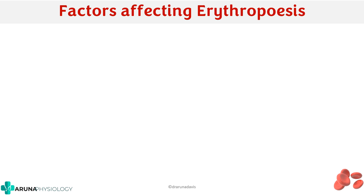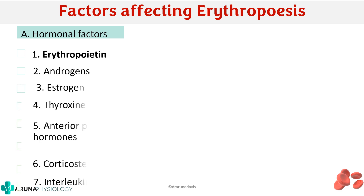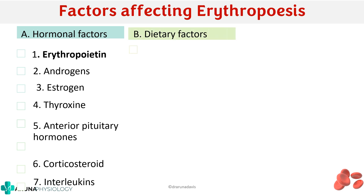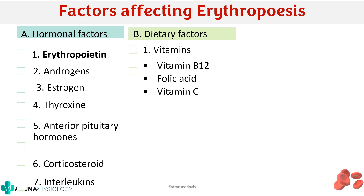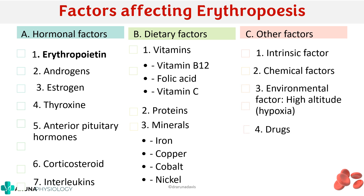The most important factor that affects erythropoiesis is hormonal factors, of which the hormone erythropoietin is very important. We will also mention the influence of other hormones like androgens and estrogens. The next important factor is dietary factors, including vitamins especially vitamin B12, folic acid and vitamin C, then proteins and minerals like iron, copper, cobalt and nickel. We will also talk about intrinsic factor, chemical factors, environmental factors and drugs.